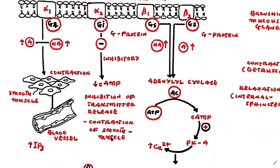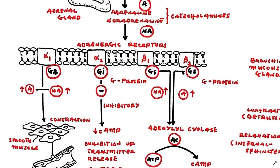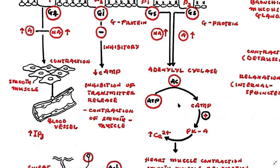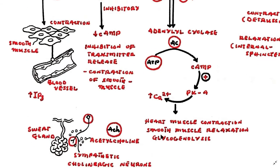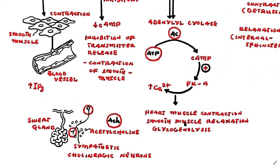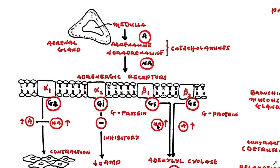All beta receptors are linked to Gs protein and activate adenylyl cyclase in order to make cyclic adenosine monophosphate, also known as cAMP. This eventually increases calcium concentration and the subsequent relaxation of smooth muscle, for example in the blood vessel as well as in the airways. It also increases the force of contraction of cardiac muscle as well as the heart rate.